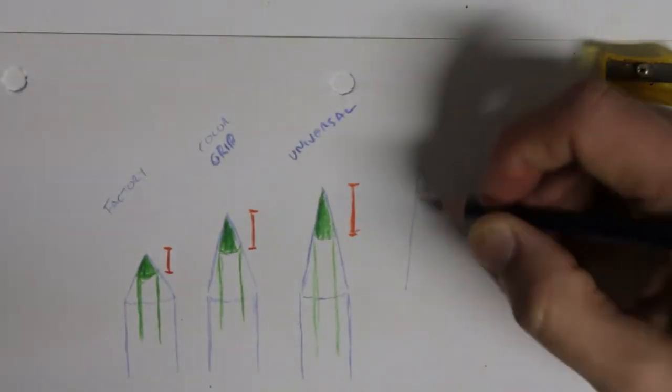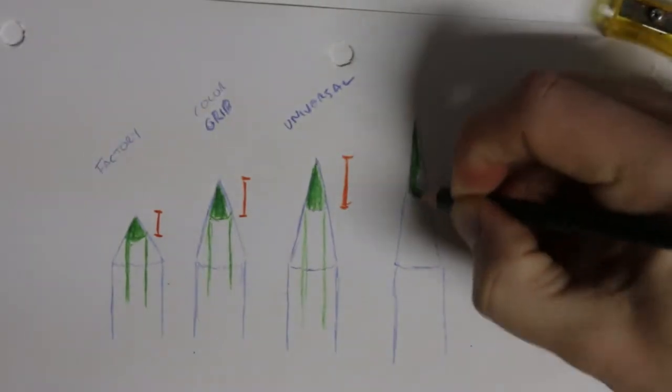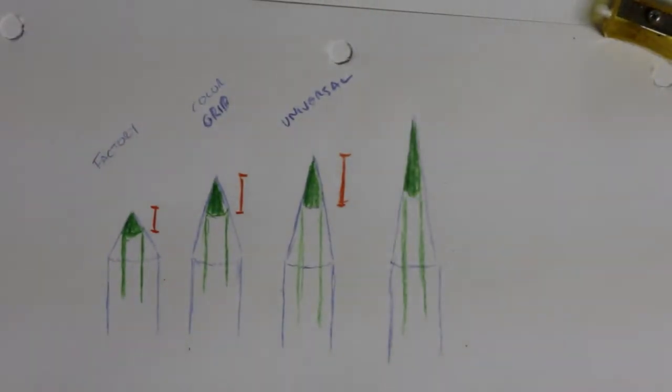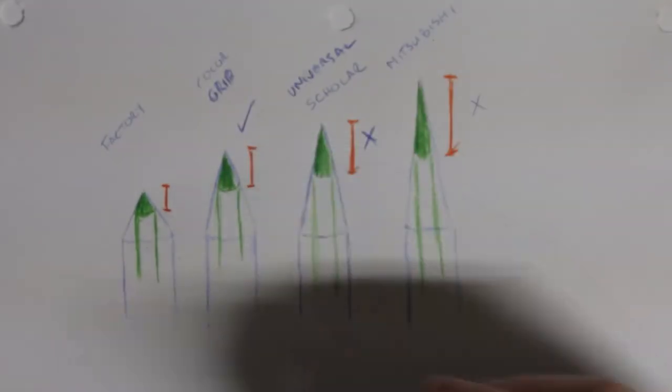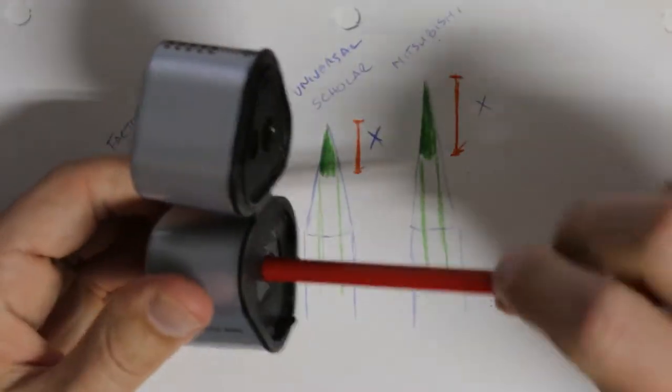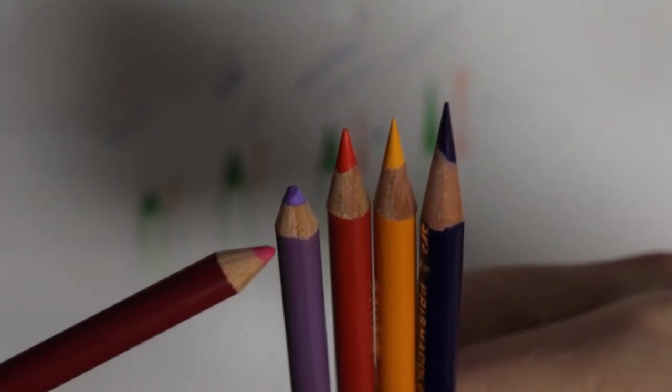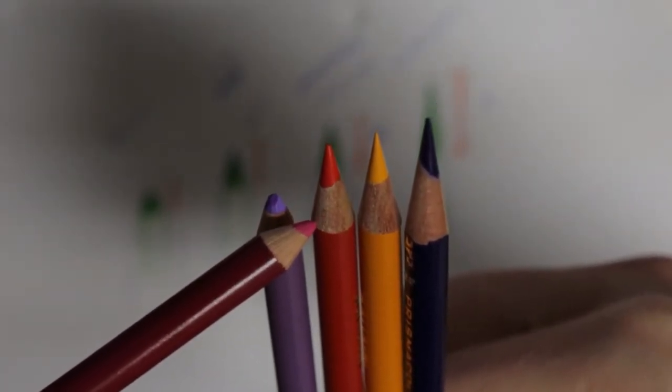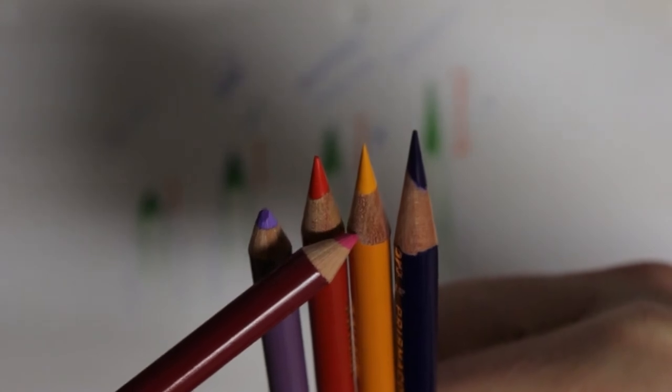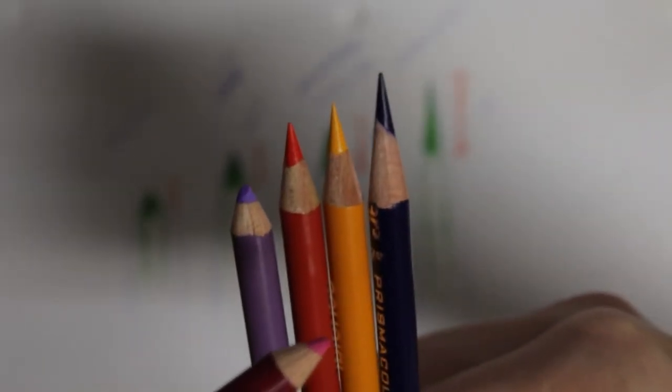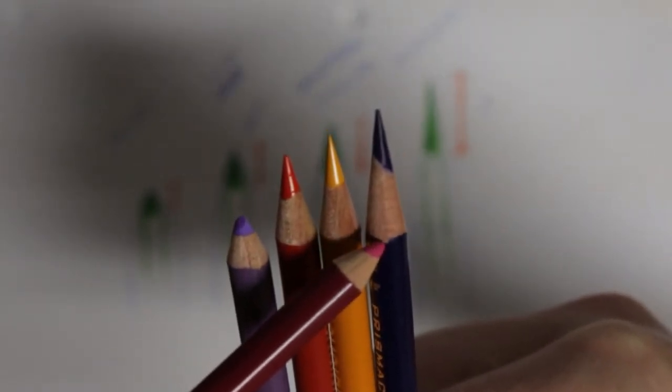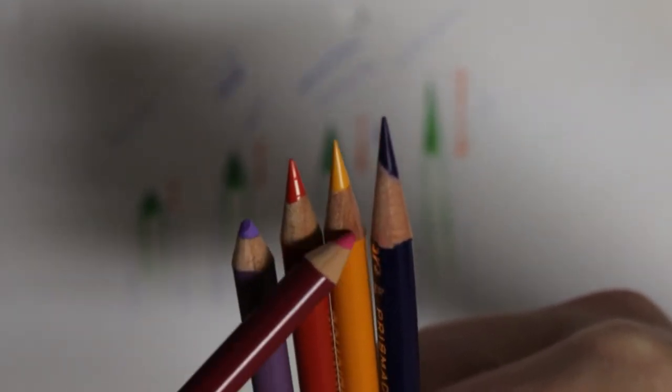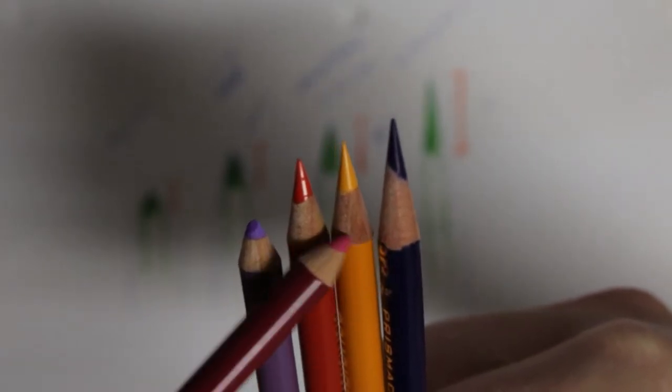The universal sharpener and the Prismacolor Scholar sharpener will result in a high angle lead that is just going to break. Here I have used a Mitsubishi sharpener with an extreme high angle lead just to emphasize what I mean. If we look at the four results the Mauve pencil is the factory one. The red is done with the color grip. The gold yellow is done using the universal sharpener and the blue one using the Mitsubishi sharpener. The red one is what we want to go for.